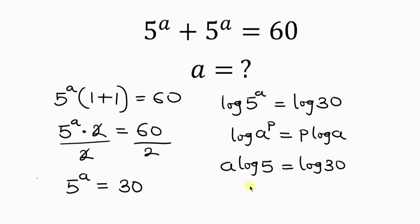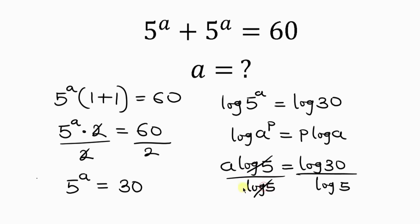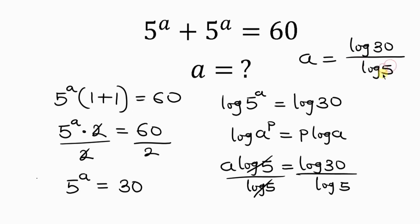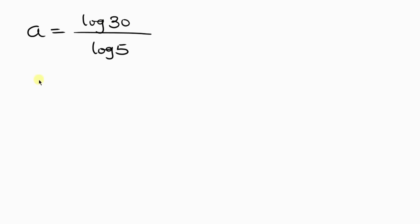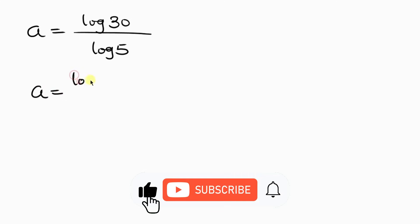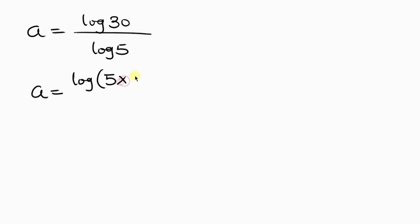Our next step will be to divide both sides by log 5. I'll divide the left hand side by log 5 and the right hand side by log 5. Simplifying, we have a equal to log 30, which is the same as log(5 times 6), all over log 5.